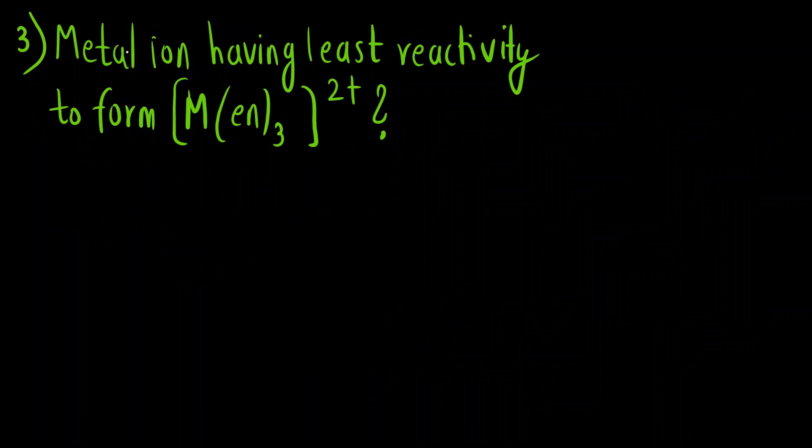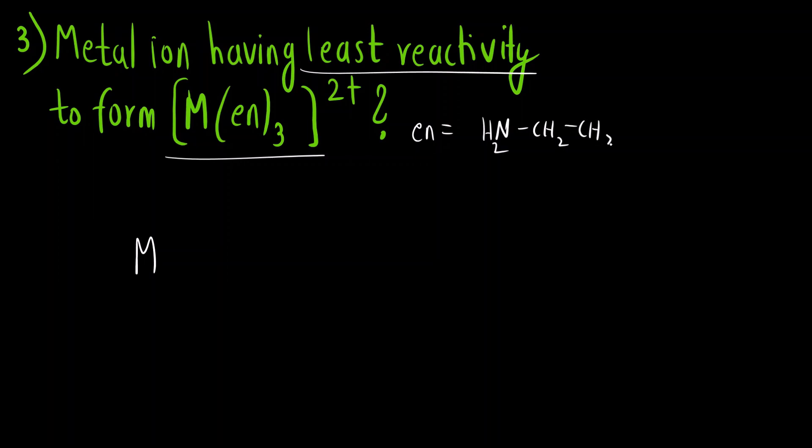Next question, metal ion having least reactivity to form this complex [M(en)₃]²⁺. Now how this complex will be formed? M EN, what is EN? EN is ethylene diamine. NH₂-CH₂-CH₂-NH₂.